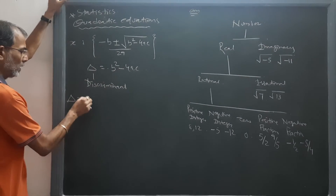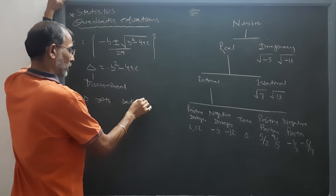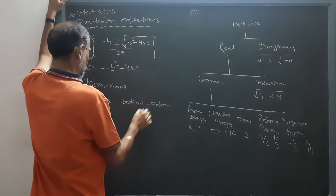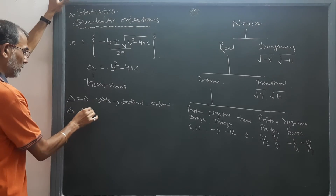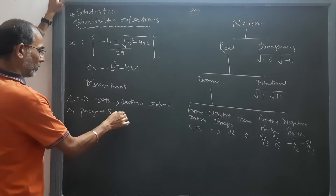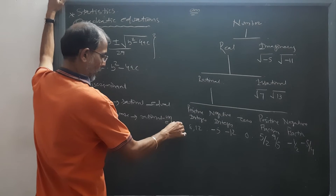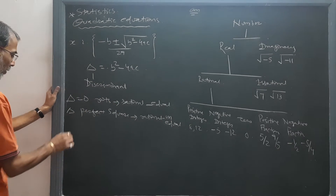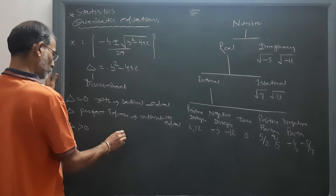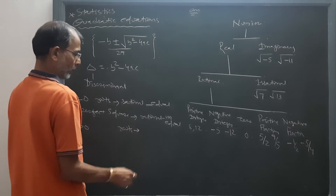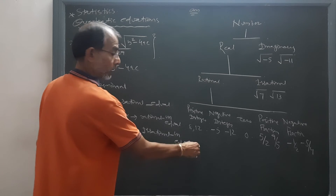If the discriminant is equal to zero, roots will be rational and equal. If the discriminant is a perfect square, then roots will be rational and unequal. If the discriminant is greater than zero but not a perfect square, then roots will be irrational and unequal.